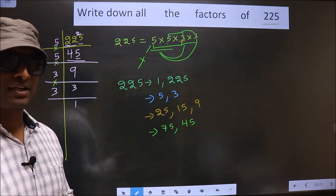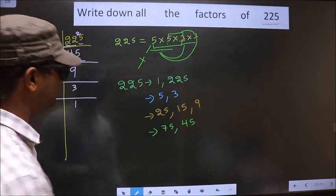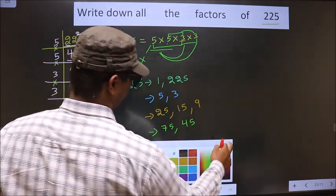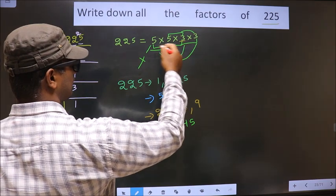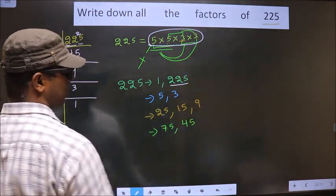Next. Now, you take a combination of four numbers. Here, we have only four numbers. If we take all the four numbers, we get 225 only.